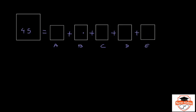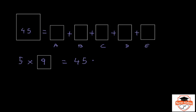So we have 5 times a number equal to 45. The question is: 5 times what is 45? And if you know your tables, you'd realize this number has to be 9 because 5 times 9 is 45. So each box has got 9 syringes in it.